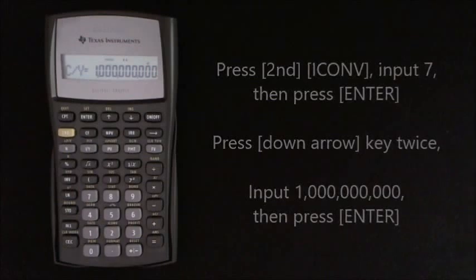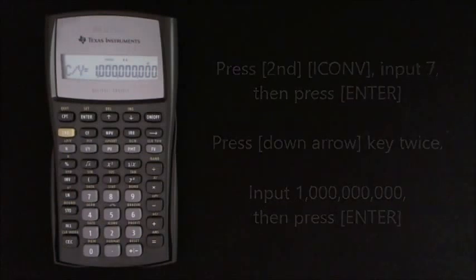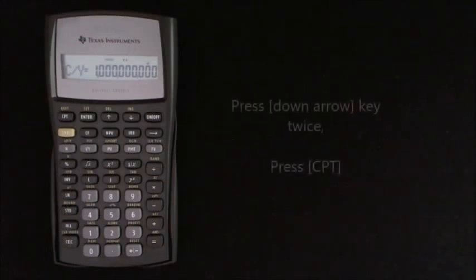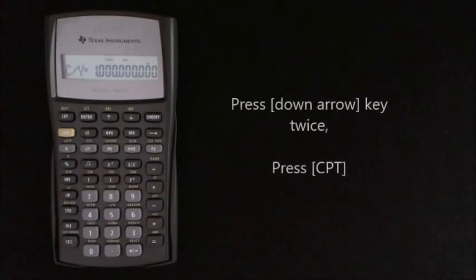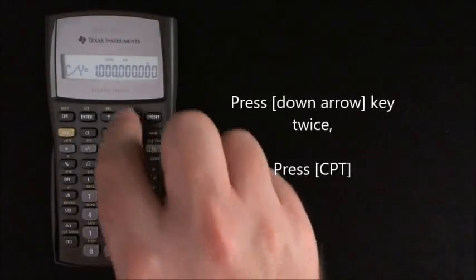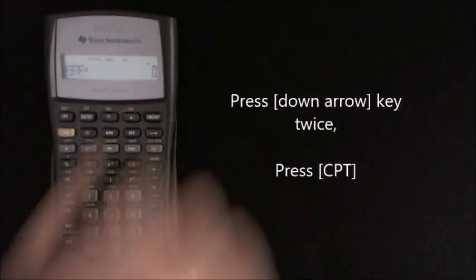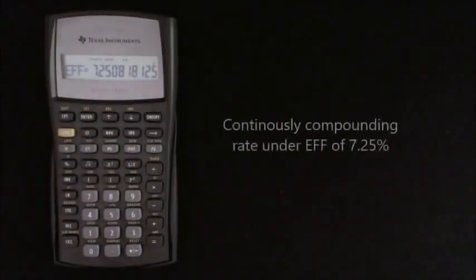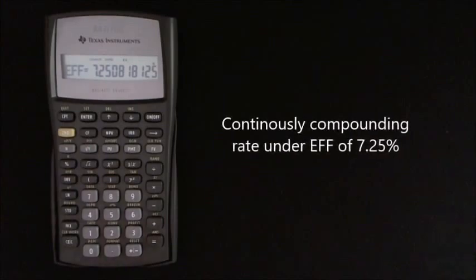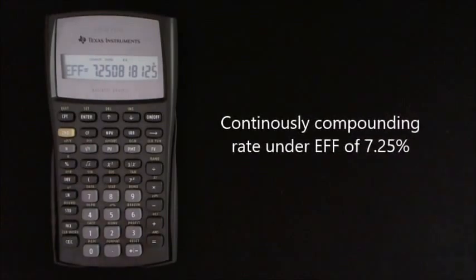By inputting a very large value for the number of compounds per year, it gives you an approximation of infinity, which results in continuous compounding. Then press the down arrow twice, and this will give you the annual continuously compounding rate under EFF of 7.250818125.